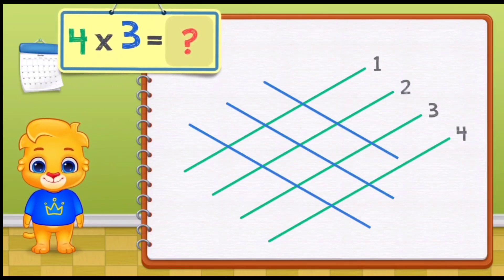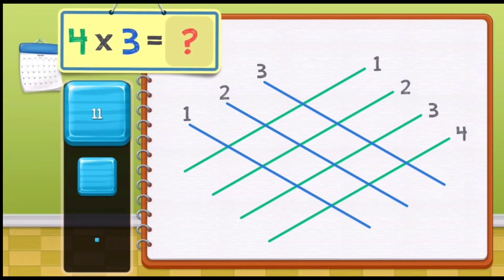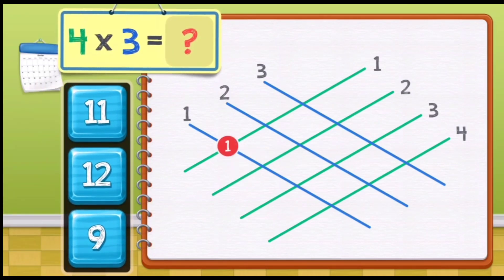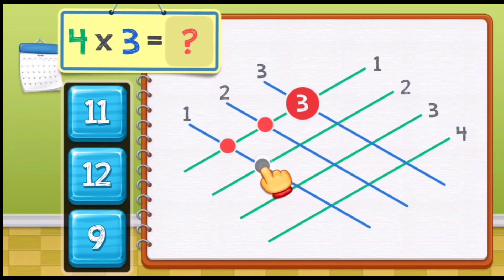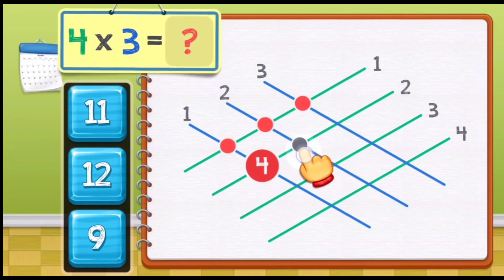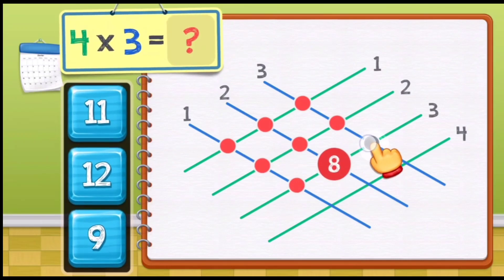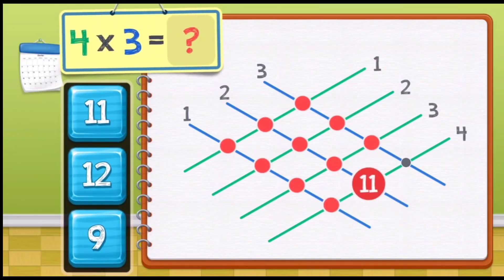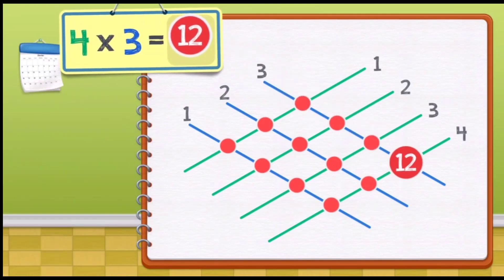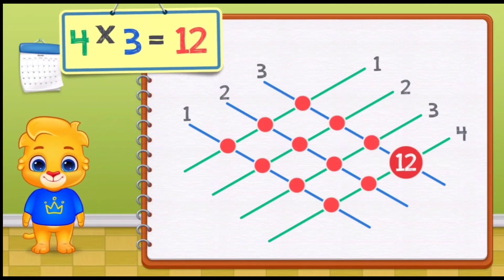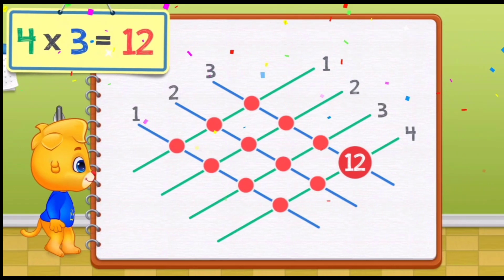4 times 3 equals... Touch intersection points: 1, 2, 3, 4, 5, 6, 7, 8, 9, 10, 11, 12. 4 times 3 equals 12! Woo!